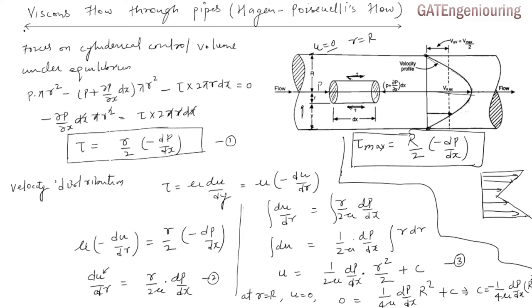This topic — viscous flow through pipes — is also known as Hagen-Poiseuille flow, and it is very important from an exam (GATE) perspective. Questions are commonly asked about the velocity profile, maximum velocity, average velocity, and volume flow rate.